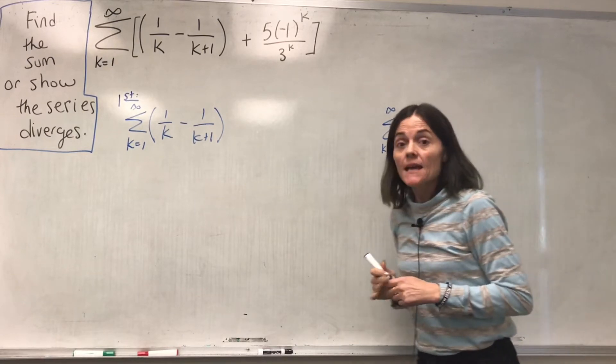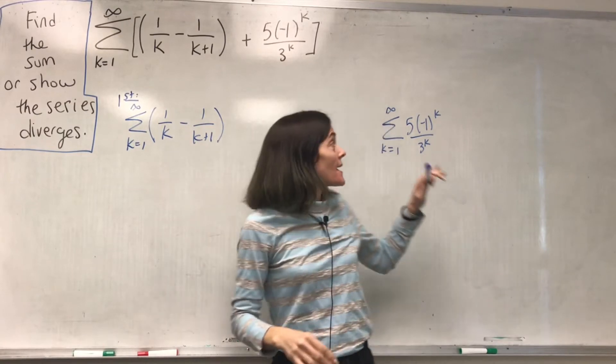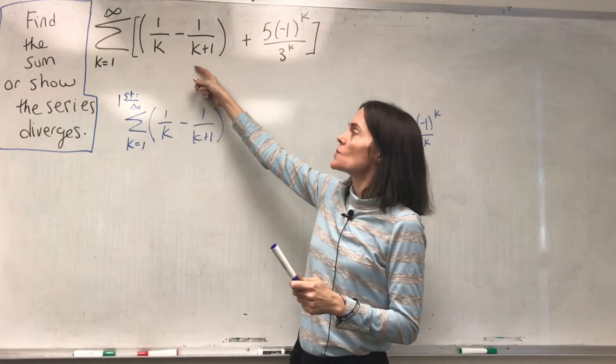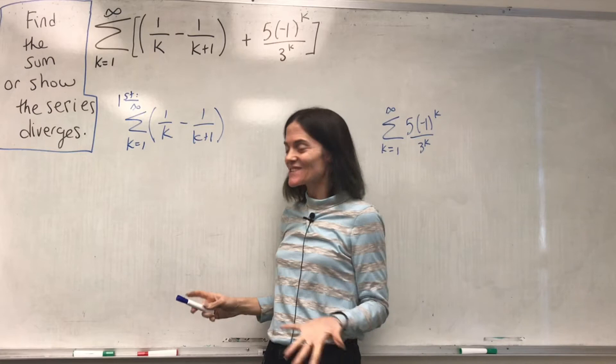Then, let's suppose this converges and we know the sum, and this converges and we know the sum. Then, this series will converge to this plus this. This is the way it works.